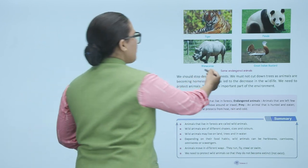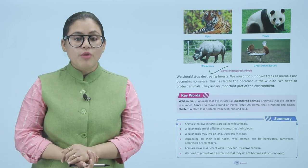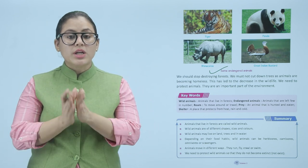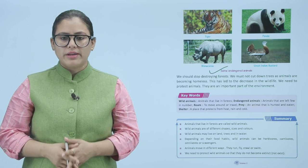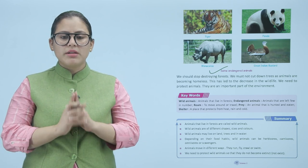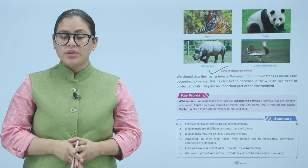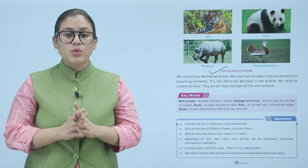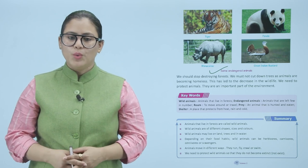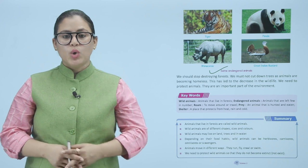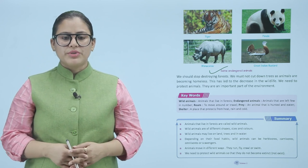Here are examples of endangered animals. We should stop destroying forests and must not cut down trees, as animals are becoming homeless. This has led to a decrease in wildlife. We need to protect animals — they are an important part of the environment. We should stop deforestation because most animals are losing their homes.